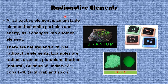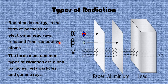What are radioactive elements? A radioactive element is an unstable element that emits particles and energy as it changes into another element. There are two types: natural and artificial. Examples of natural radioactive elements are radium, uranium, plutonium, and thorium. Artificial radioactive elements are isotopes of stable elements, such as sulfur-35, iodine-131, and cobalt-60.